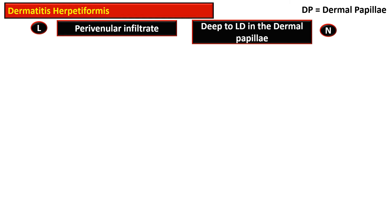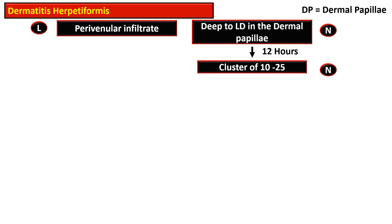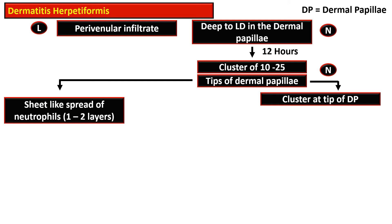In terms of how the morphology of dermatitis herpetiformis lesions evolves: first, there is a perivascular infiltrate of lymphocytes, and soon after there is a neutrophilic infiltrate deep to the lamina densa in the dermal papillae. These neutrophils increase in number, and within 12 hours they form clusters of 10 to 25 neutrophils, present at the tip of the dermal papillae.